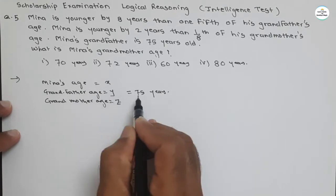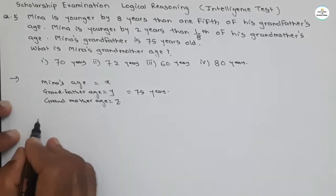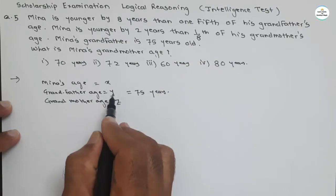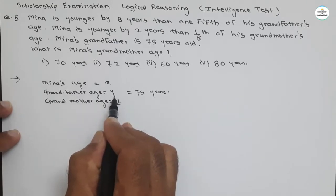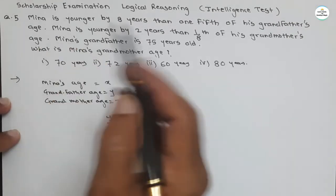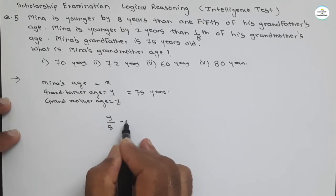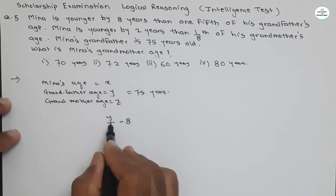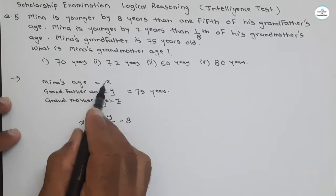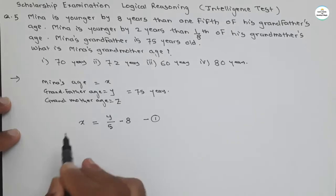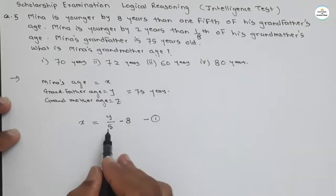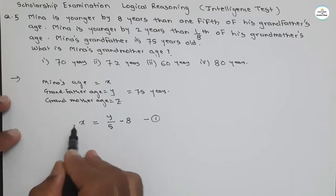Grandfather's age we have assumed as Y is equal to 75 years. Now see the condition: Meena is younger by eight years than one-fifth. As grandfather's age is Y, one-fifth will be Y upon five. And Meena is younger than this one-fifth, meaning it is less. So Y upon five minus eight. We have assumed Meena's age as X, so this is our first equation: X equal to Y upon five minus eight. One-fifth means one upon five.